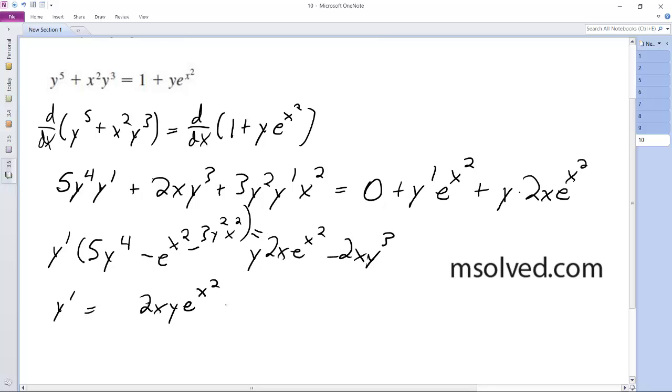divided by 5y to the fourth minus e to the x squared minus 3y squared x squared.